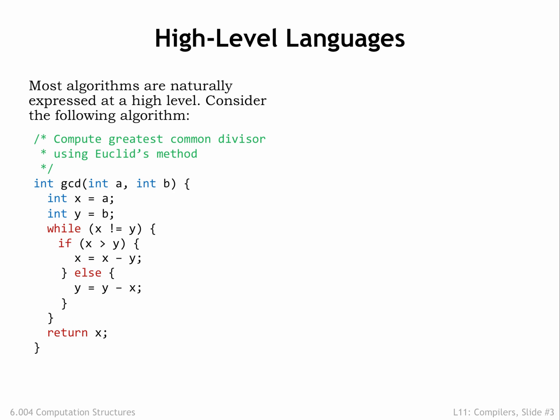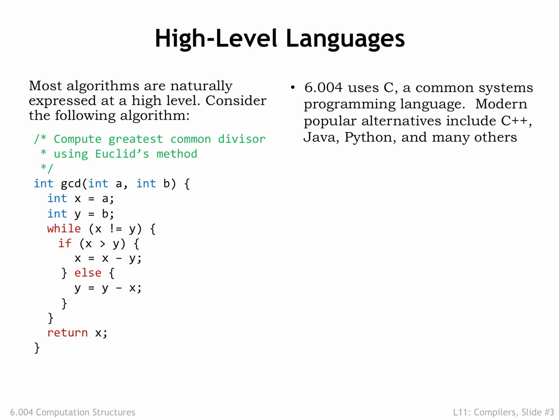Here we see Euclid's algorithm for determining the greatest common divisor of two numbers. In this case, the algorithm is written in the C programming language. We'll be using a simple subset of C as our example high-level language. Please see the brief overview of C in the handout section if you'd like an introduction to C syntax and semantics.